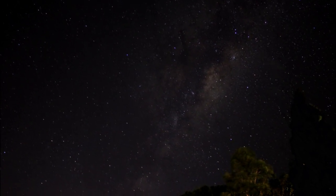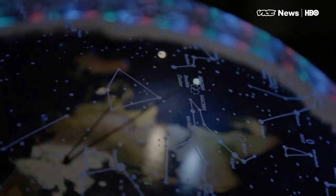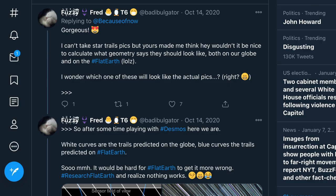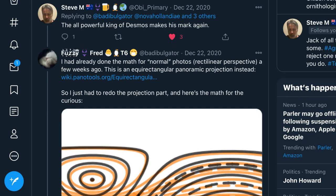But regardless of that, what would star trails actually look like on a flat earth compared to the globe? A buddy of mine on Twitter, who's rather good at geometry and astronomy, has used some special software to analyze some of my star trails from the east coast of Australia, to see if we can compare them to the flat and globe earth models.